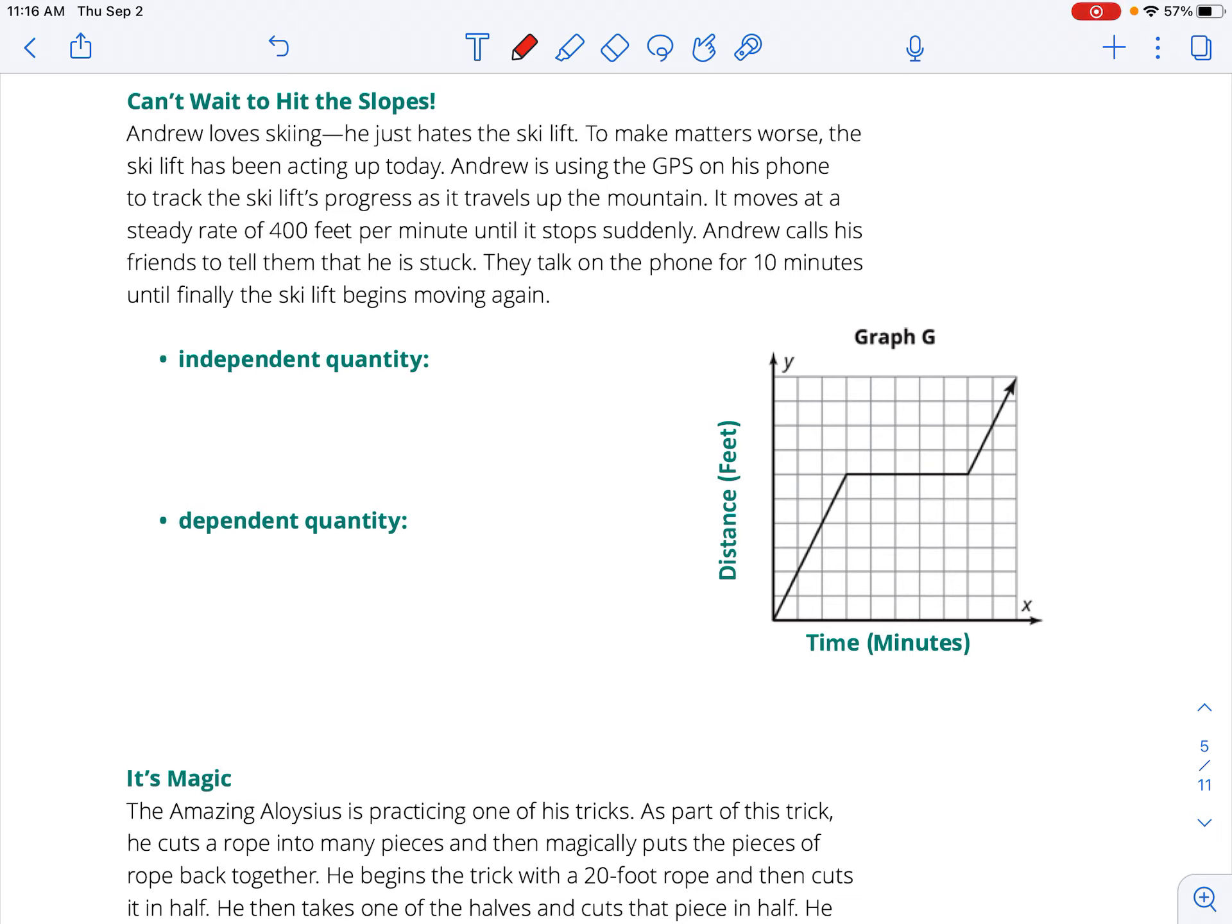For the slopes, you're traveling up a ski lift here. You're riding on a ski lift up the mountain. As time goes by, this is going to represent your independent quantity, and this is going to be your dependent quantity. So as time goes by, you're going up the slope. It breaks, as they say in the paragraph. You sit for 10 minutes. You're not moving at all, so you're not moving up anymore. And then it starts back up, and then you start to go back up the mountain. That's why we chose graph G right here.